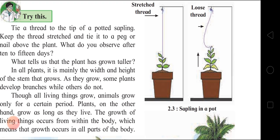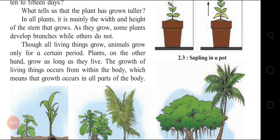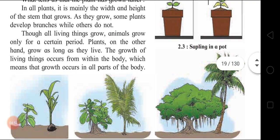They have potted a plant - a sapling in a pot. On the left side of this pot they have tied a thread and stretched it. Now after some days as the plant grows, the thread becomes loose. This means that in plants also there is growth. In the same way, though all living things grow, animals grow only for a certain period. But plants, on the other hand, grow as long as they live. The growth of living things occurs from within the body, which means that growth occurs in all parts of the body.